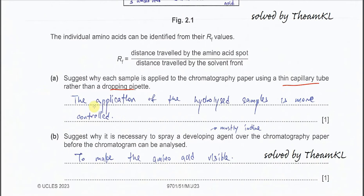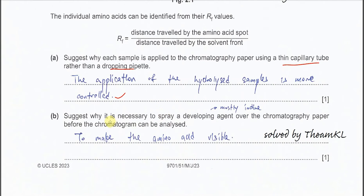Okay, so the answer is the application of the hydrolyzed sample is more controlled. Part B. Suggest why it is necessary to spray a developing agent. Normally for paper chromatography, we use iodine as the developing agent.